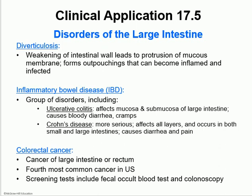A couple of diseases that could affect the large intestine: diverticulosis — these are little pouches or protrusions of the mucus membrane that form in the wall of the large intestine. Chyme might remain in these pouches and ferment, leading to inflammation and also diarrhea. Inflammatory bowel disease or IBD is really a group of disorders with two different categories: ulcerative colitis and Crohn's disease. Ulcerative colitis affects the mucosa and submucosa of the large intestine, causing very bloody diarrhea with lots of cramps. Crohn's disease is more serious — it affects all of the layers of both the large intestine and the small intestine, and also causes a painful diarrhea.